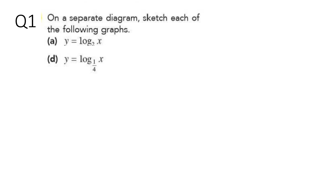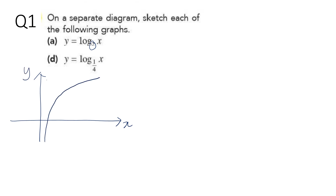If you look at graph (a), the base is 2, which is more than 1. So the graph will look like this, where the x-intercept is 1. Because when you substitute x to be 1, y will give you log base a of 1, which gives you 0. So the x-intercept is (1, 0). Be careful when you draw the curve — this part of the curve does not touch the y-axis.